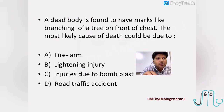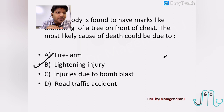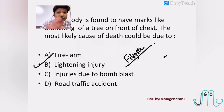A dead body is found to have marks like the branching of a tree on the front of the chest. The most likely cause of death is lightning injury. These burns are called filigree burns, arborescent burns, or Lichtenberg markings — commonly seen with lightning. We also have one more sign seen with decomposition which also shows branching — that is marbling, which is green in color.